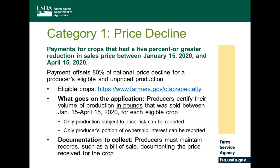Lack of documentation will not prevent a producer from applying — anyone who wants to self-certify can apply for the program. However, if pulled for a spot check, producers will want to provide something to support the production they've reported. AMS will be conducting spot checks, and they will work with producers to help establish what documentation is required. Also, commodities sold under any use during the applicable time period are eligible under category one — for example, lemons sold as juice intended for the fresh market still qualify.